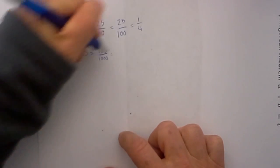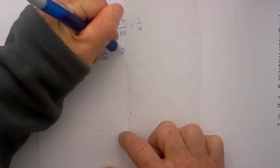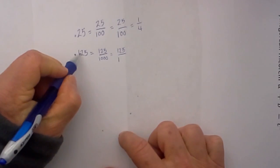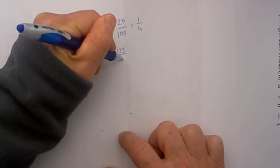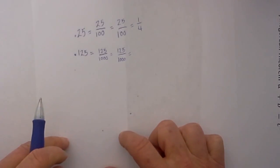I will show you the other method is 125, write a one and just count 1, 2, 3. That is how many zeros I will place and then I reduce this.